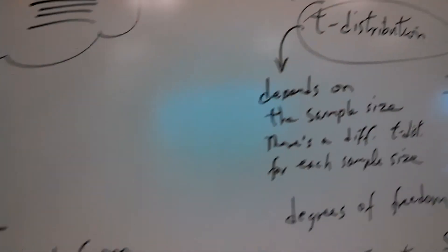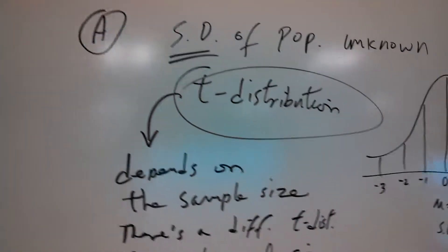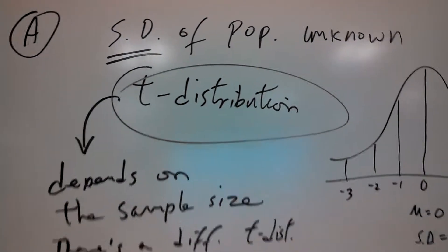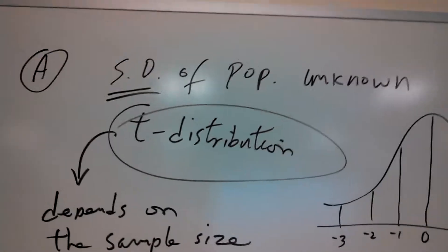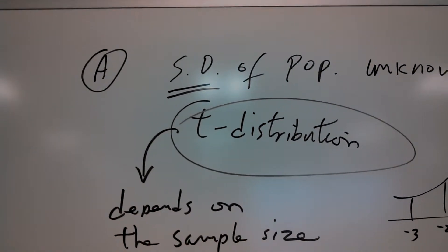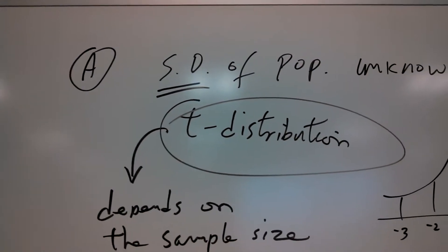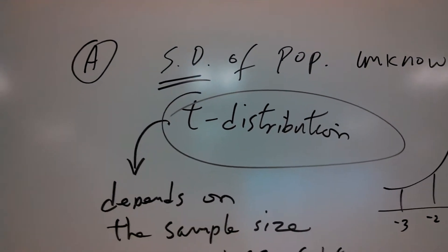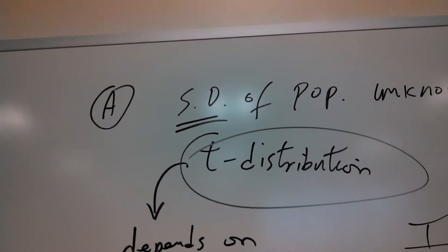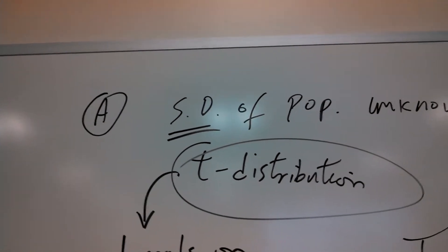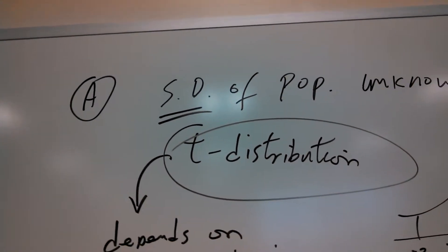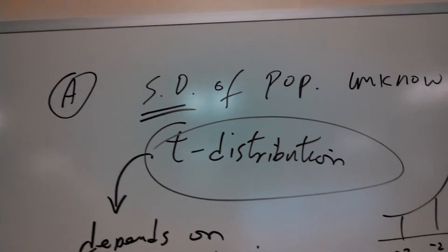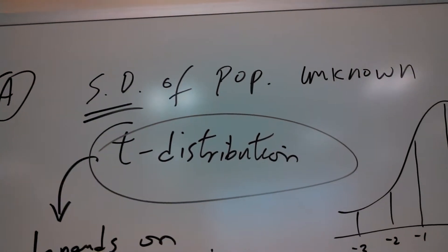There are two situations that we have to be concerned about. Situation number one: the population standard deviation is not known.